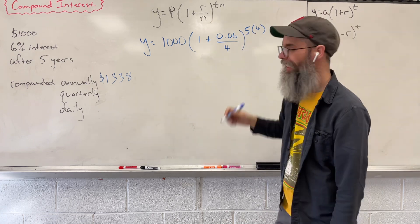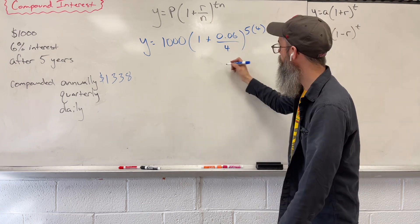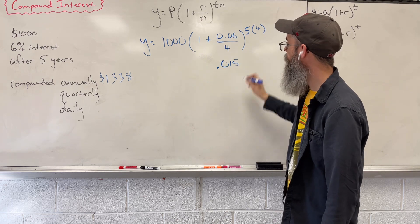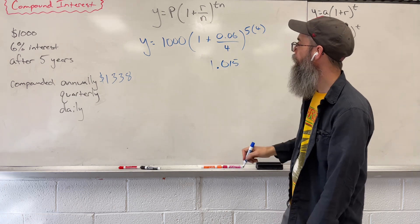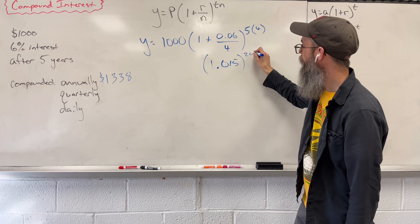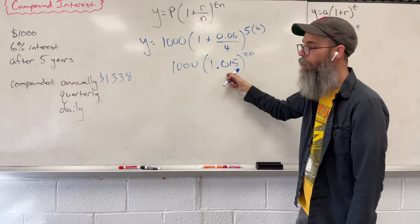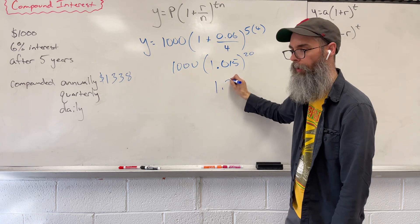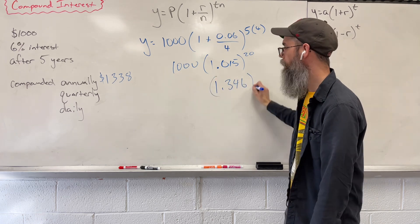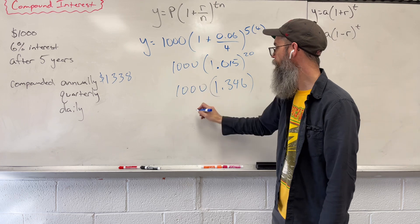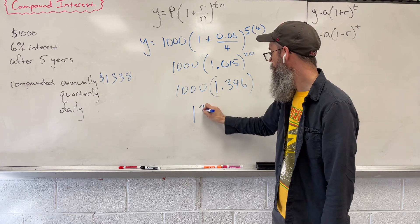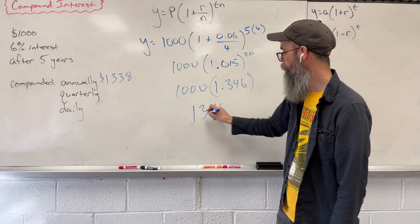Well, 0.06 divided by 4 is going to give us 0.015. Add 1 to that. Let's raise that to the 20th power, and then multiply by 1,000. When we raise it to an exponent, we're going to be left with 1.346. Multiply by 1,000, and we have $1,346.